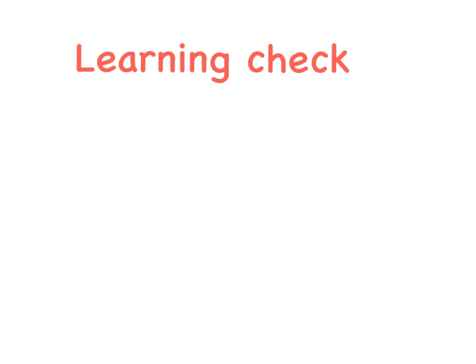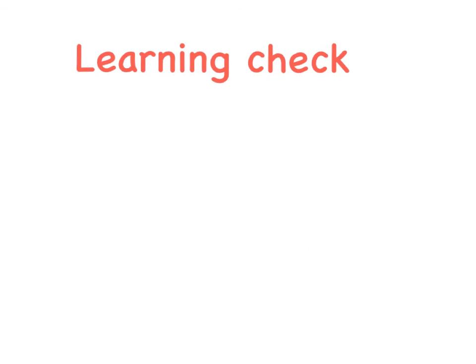So tonight's learning check is to go over the two new symbols that we have looked at today. They are the capital U for universe and the forward slash, which means but not in. Make sure you're able to explain both of these in your own words, and we'll do some questions on them tomorrow.